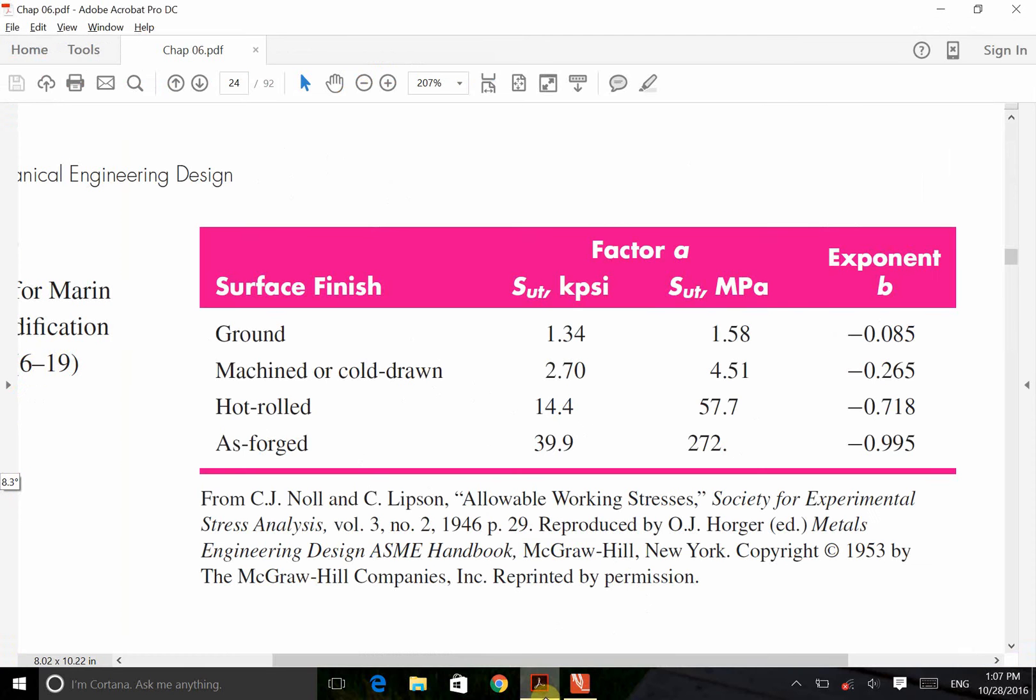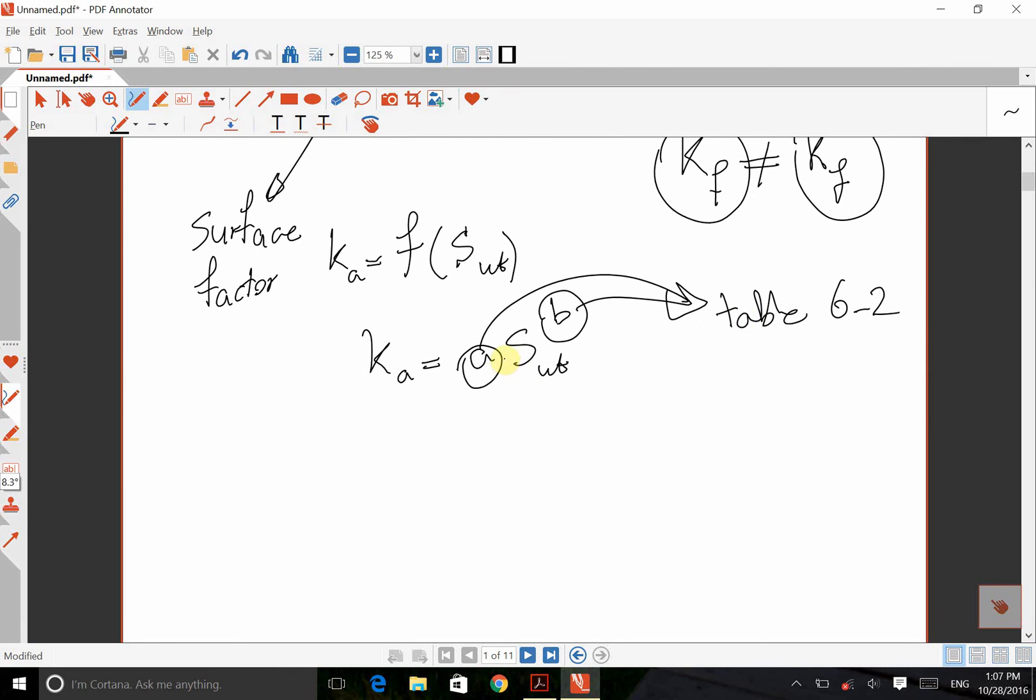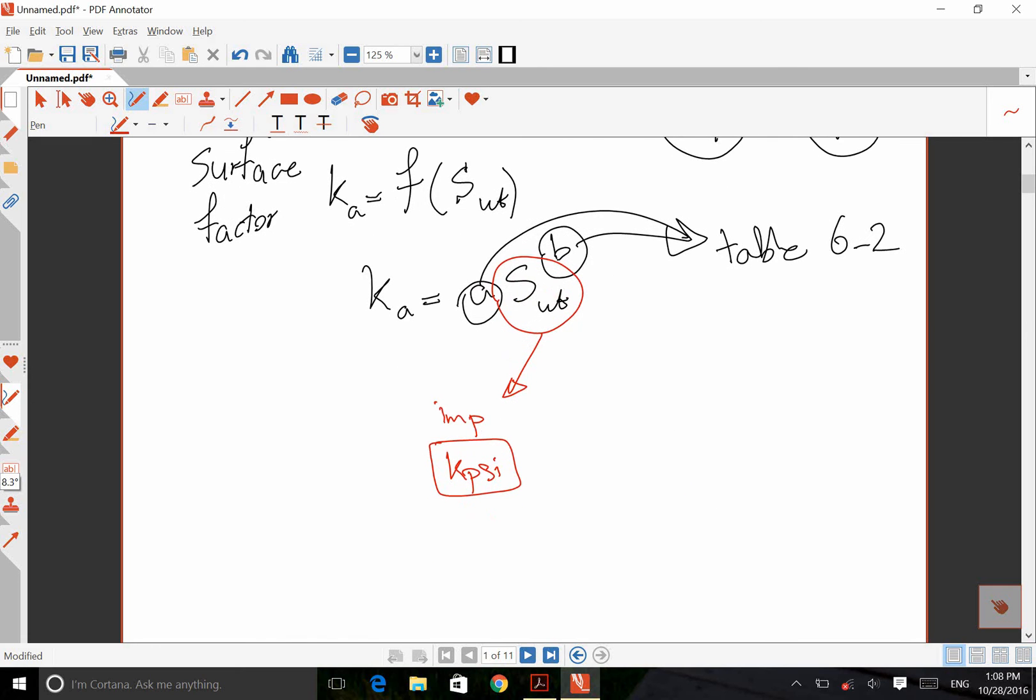Okay, if I just go to the book here, you see that's table 6-2. And if our finish is hot rolled, for example, if we are here, factor A will be either 14.4 when we are working imperial system or 57.7 when we are working SI system. And exponent B is the same for both scenarios. There is one important point here that we have to notice about that. And that is this SUT, if you are working in imperial system, the unit of this SUT has to be KPSI. So if we have any other units first, we need to convert that one to KPSI, then we can substitute that one here and find KA.